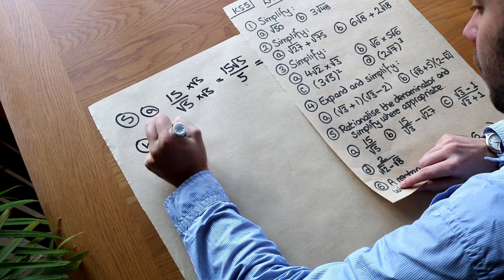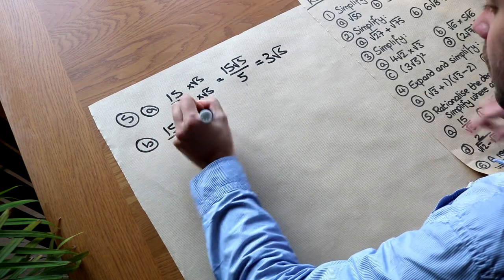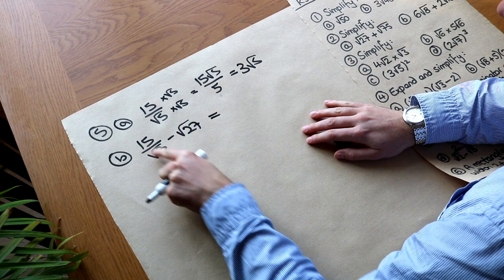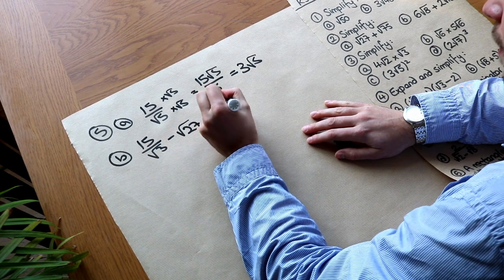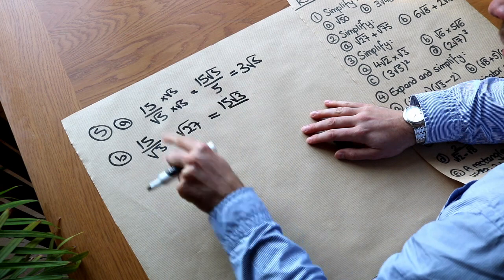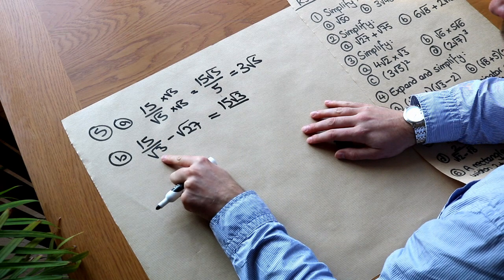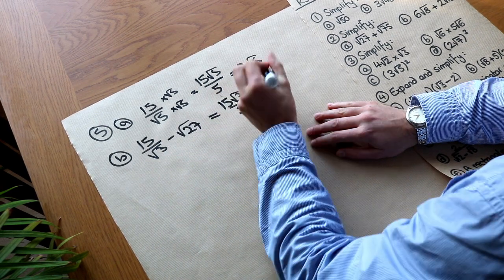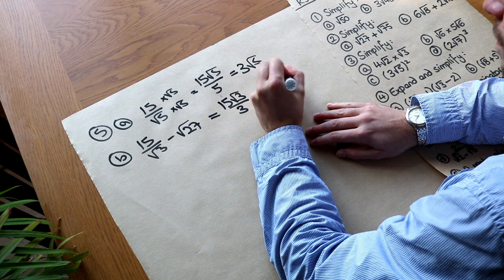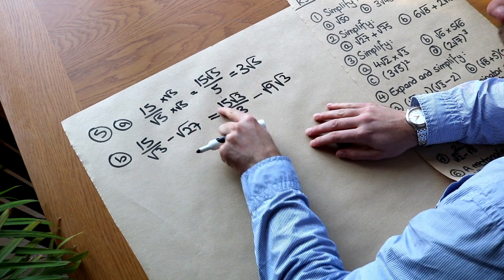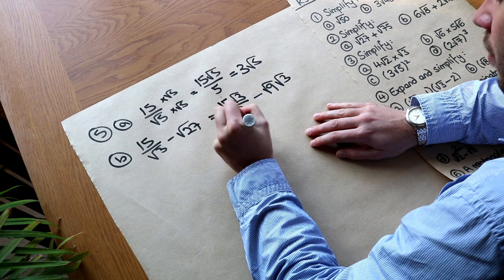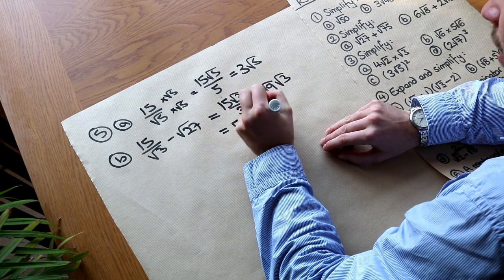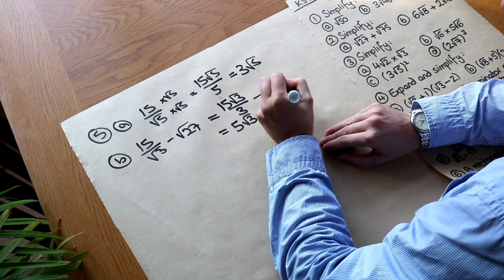For 15 over (root 3 minus root 27), we multiply top and bottom by root 3. The top becomes 15 root 3, and the bottom becomes root 3 times root 3, which is 3. Root 27 simplifies to root 9 times root 3, which is 3 root 3. So 15 divided by 3 gives 5 root 3, minus 3 root 3, which equals 2 root 3.